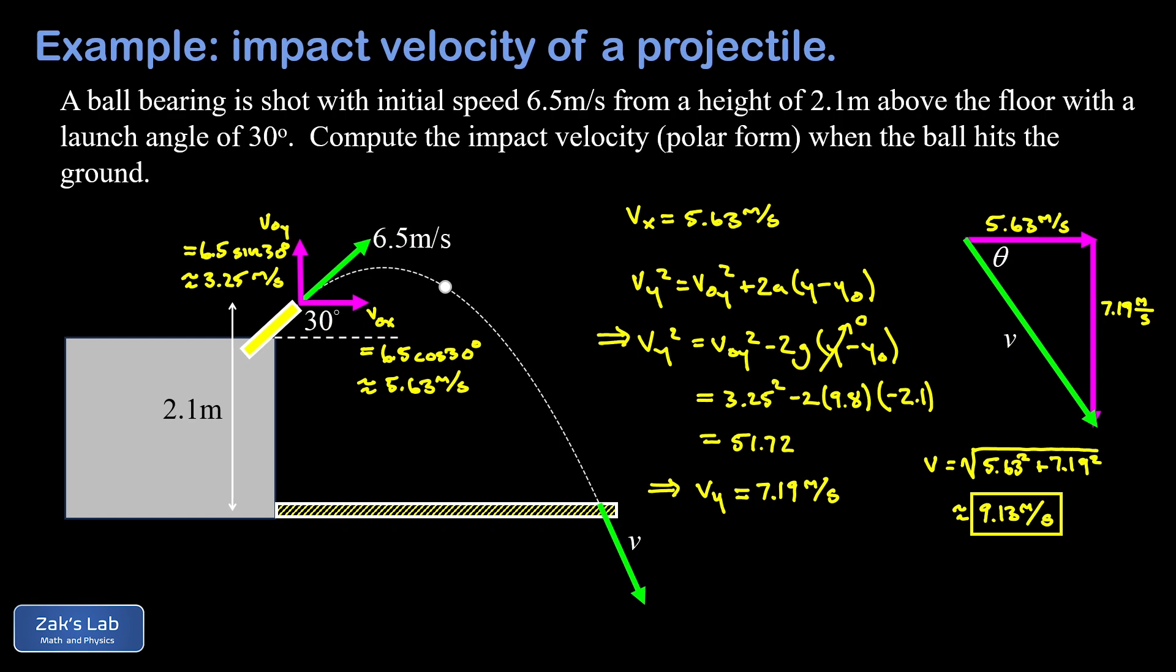Finally we want to get the angle of impact to complete the polar form of this vector. That's going to be the angle whose tangent, in other words the inverse tangent, of 7.19 over 5.63. If you want this to come out with a minus sign on it that's fine, you could put the minus sign on the y component there and theta will come out with a minus sign. But I normally ask my students to just draw a picture so it's clear what theta is and then just use positive numbers for all the components and it makes clear how big the labeled angle is. When I run the numbers on this I get an impact angle of 51.9 degrees.